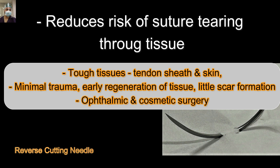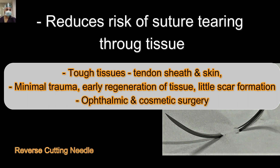This close-up view shows that the needle has a triangular cross-section at the cutting edge. That cutting edge only covers the last portion — usually one-third of the needle's length — while the rest of the needle has a normal flattened surface. The cutting edge is toward the outer side, so for tough tissue like tendon sheath and skin, as you curve the needle through tissue, there is no cutting edge toward the inner bone margin, resulting in less tissue tearing.